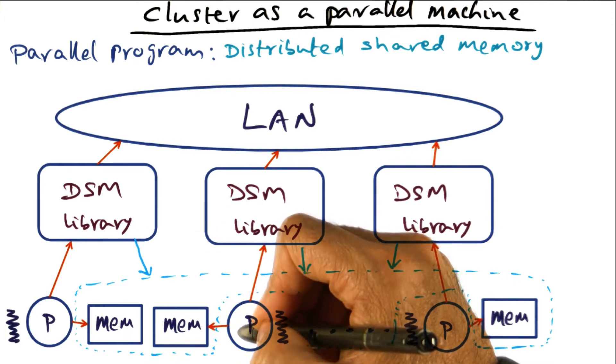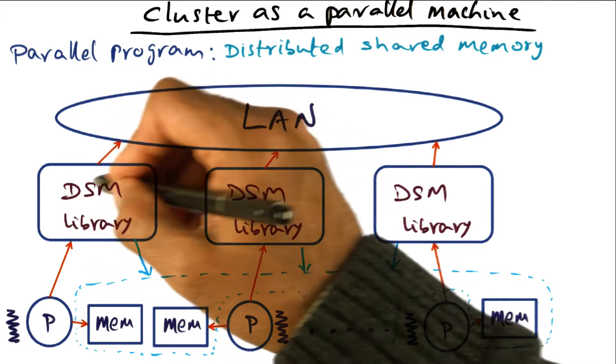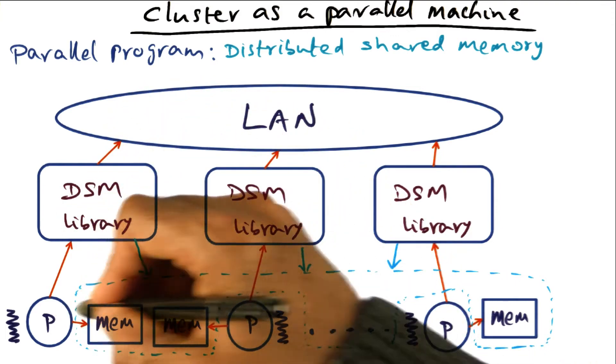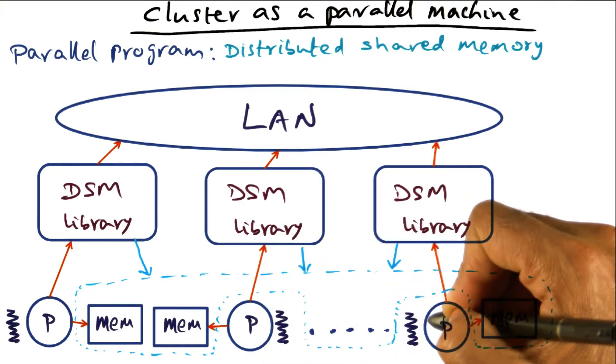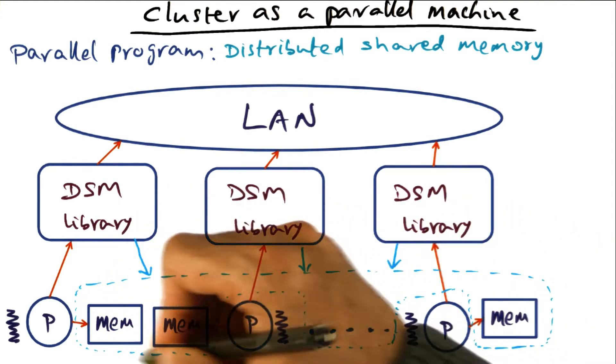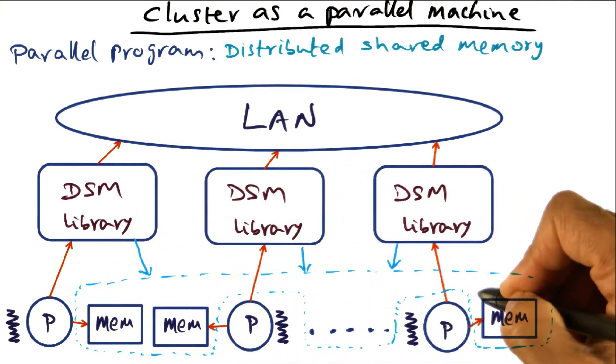The memory is not physically shared, but the DSM library gives the illusion to the threads running on each of these processes that all of the memory is shared.